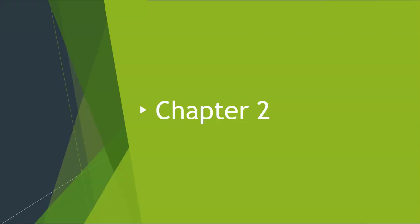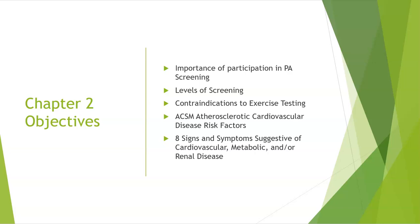Next we'll move on to chapter 2. Our chapter 2 objectives will be the importance of participation in physical activity screening, the levels of physical activity screening, contraindications to exercise testing, ACSM's atherosclerotic cardiovascular disease risk factors, and eight signs and symptoms suggestive of cardiovascular, metabolic, and/or renal disease.